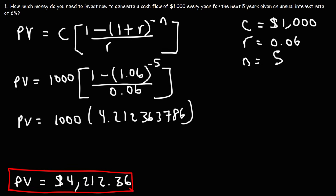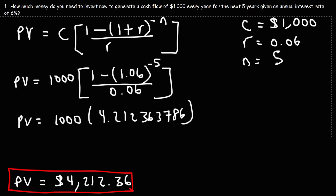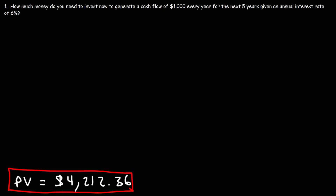Now let's talk about some other ways to get the same answer. It's important to understand that the present value of money is equal to the future value divided by (1 plus r) raised to the n.